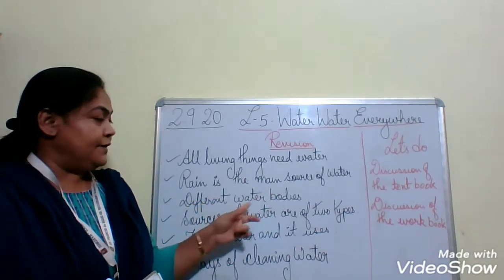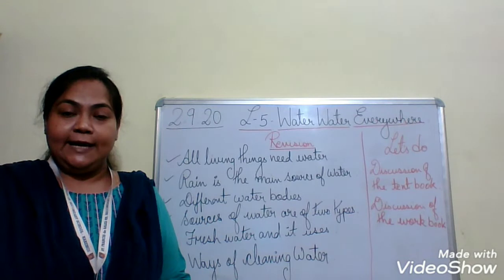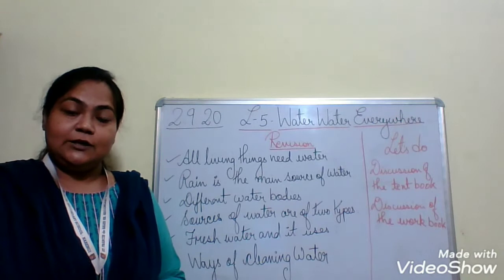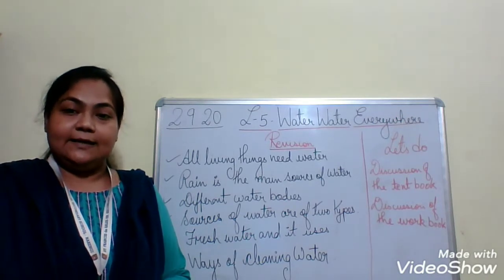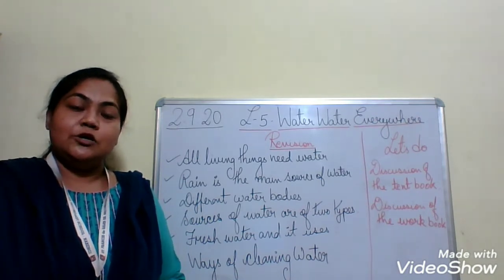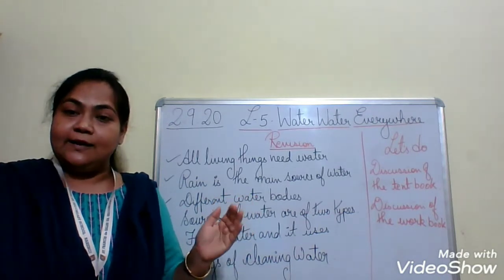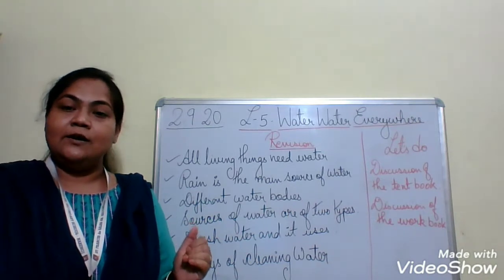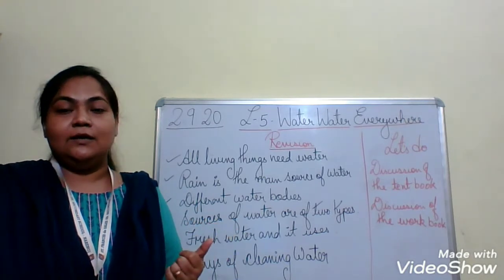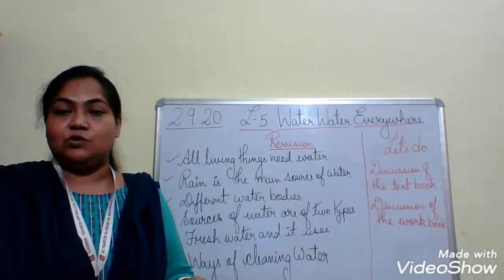We have learned about the different water bodies like rivers, ponds, lakes, streams, waterfalls, etc. And we have also learned about the two huge water bodies — that is the sea and ocean. Sea and ocean are the huge water bodies, but rivers, lakes, and ponds are smaller. Huge water bodies are ocean and seas, and smaller water bodies — smaller than ocean and seas — are lakes, rivers, ponds, streams, and waterfalls.